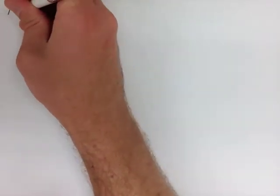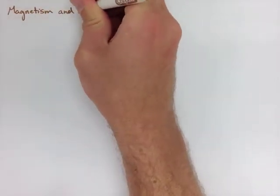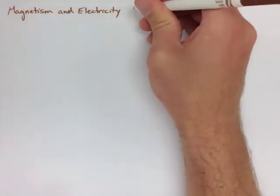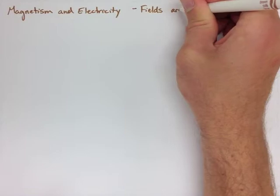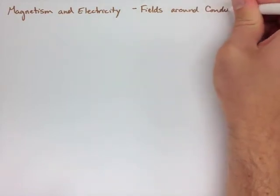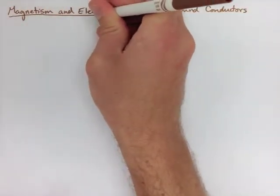When we look at fields around conductors, we have to start by looking at what was the experiment where we noticed a difference or something that was peculiar.